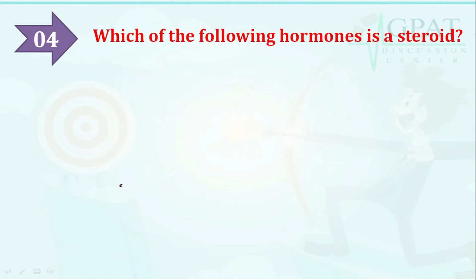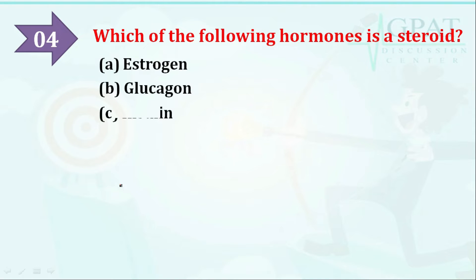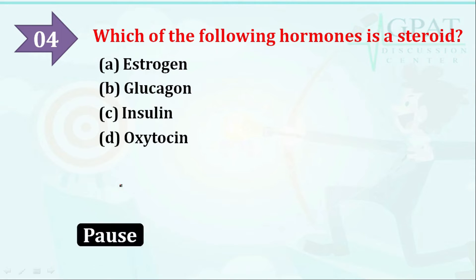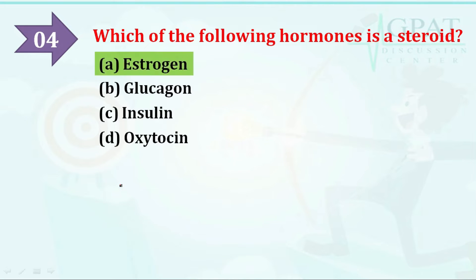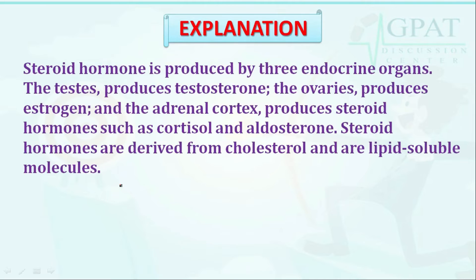The next question: which of the following hormones is a steroid? Options are: option A: estrogen, option B: glucagon, option C: insulin, option D: oxytocin. The correct answer is estrogen, which is a steroid hormone.